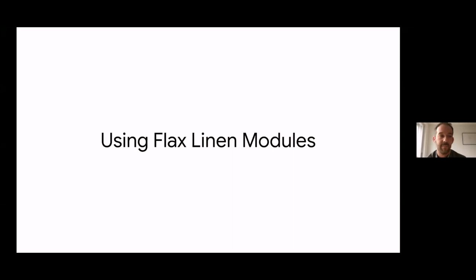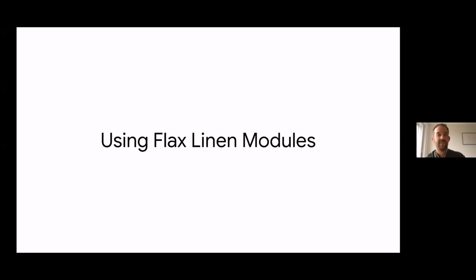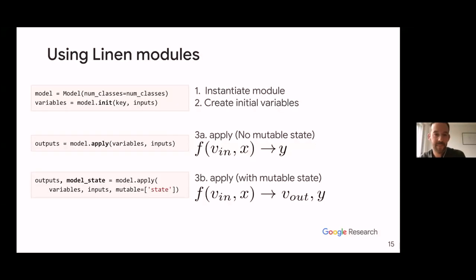Let's look at an overview of how modules are used. In the first step you instantiate the module. This only constructs the module and does not initialize any variables — we don't want to store the state of the parameters in the module. To create initial variables, you call model.init, passing the PRNG key as the first argument for initializing all the parameters, along with your model inputs — which during initialization are used only for their shapes.